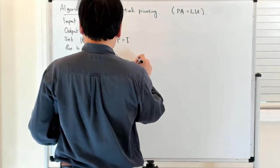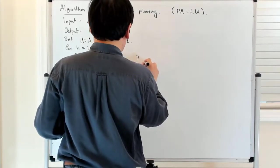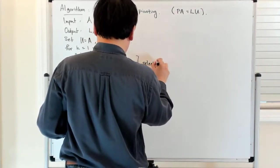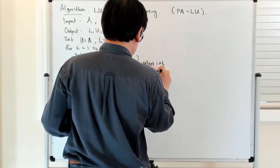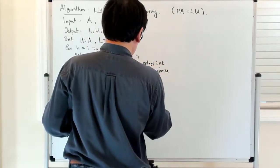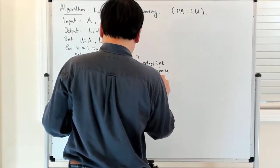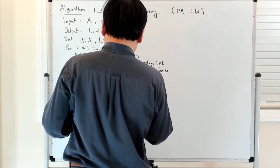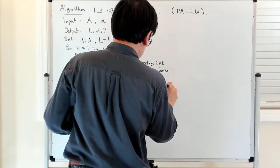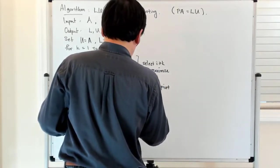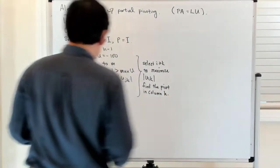So all this is doing is to select I greater than or equal to K to maximize the absolute value of U(I,K). Basically I'm just trying to find a pivot in column K. So that's the first step.